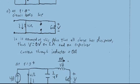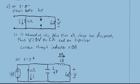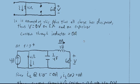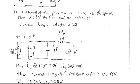At t equals 0 minus the voltage across the 6 ohm resistor is 0 volts. The voltage across the capacitor is also 0 volts, which means there is no voltage and no current — so the current through the 1 henry inductor is also 0 amps. All charge has dissipated.